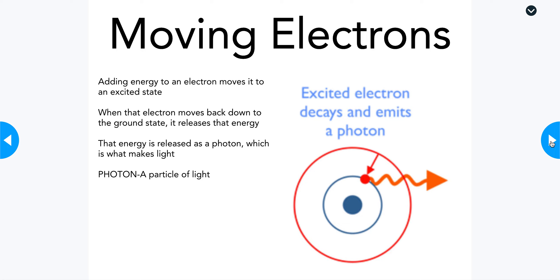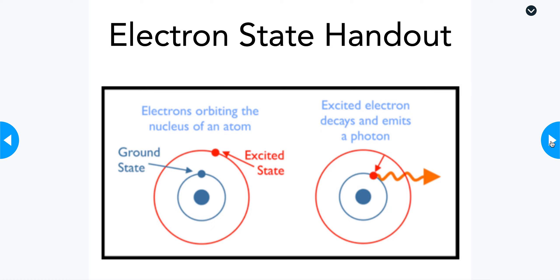A photon is a particle of light. Think about an electric element stove, or a piece of metal like a coat hanger stuck into a fire. Any time metal gets really, really hot, you're adding a lot of thermal energy to it. After it gets hot enough, it starts to glow — because some of the electrons in that metal have gone to an excited state, and now they are moving from that excited state back down to the ground state. Part of the energy they release becomes the photons of that glowing light. So your handout shows ground state, excited state, and when an excited electron decays back to ground state, it emits a photon — a particle of light.